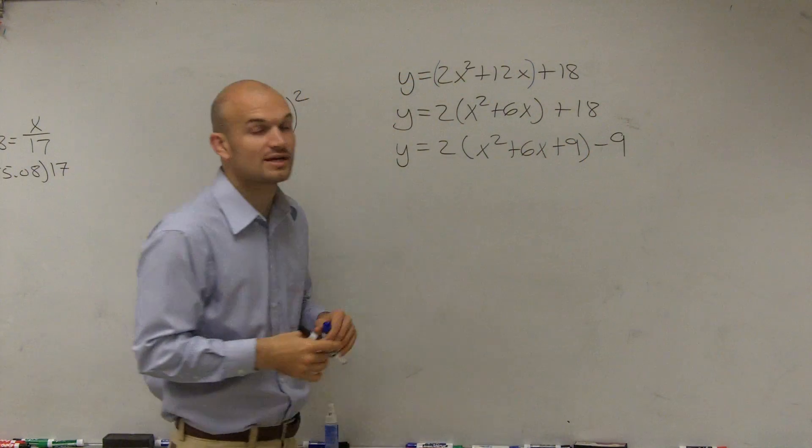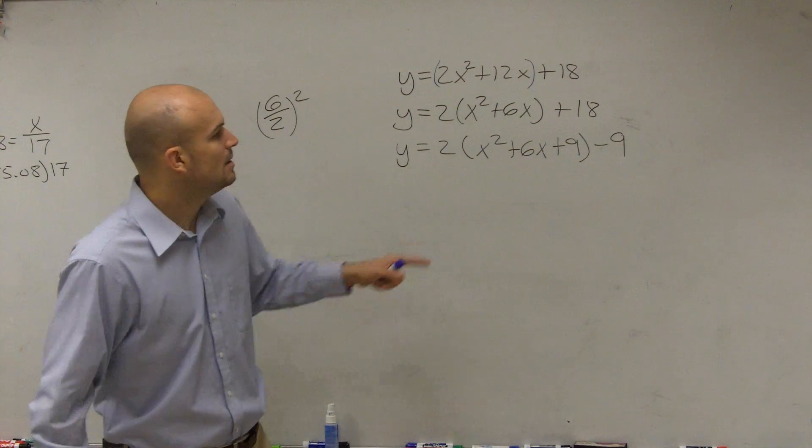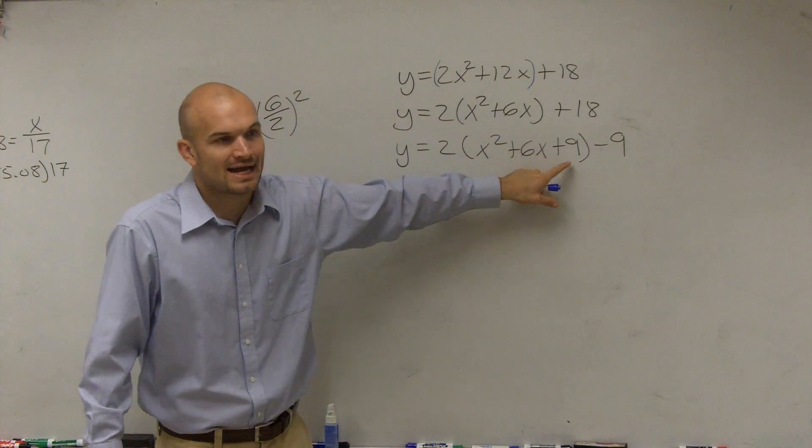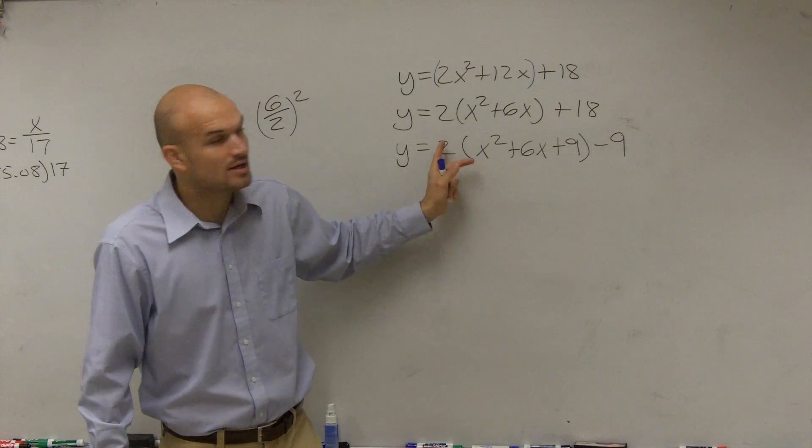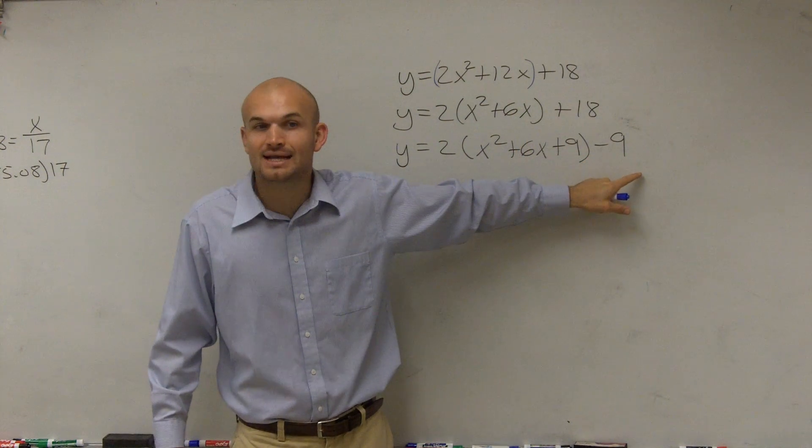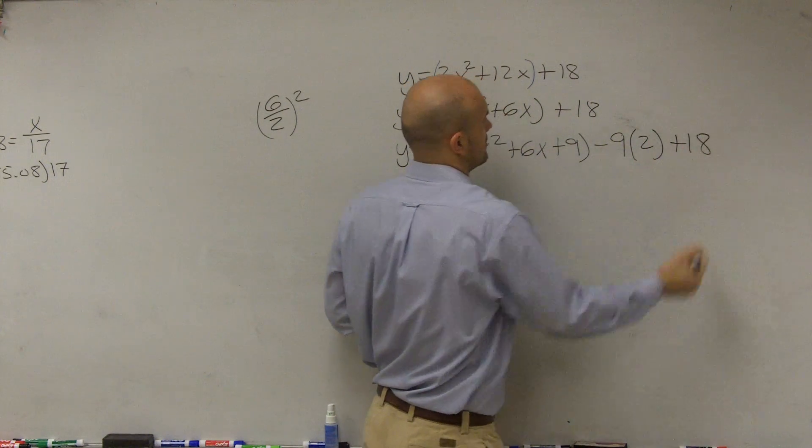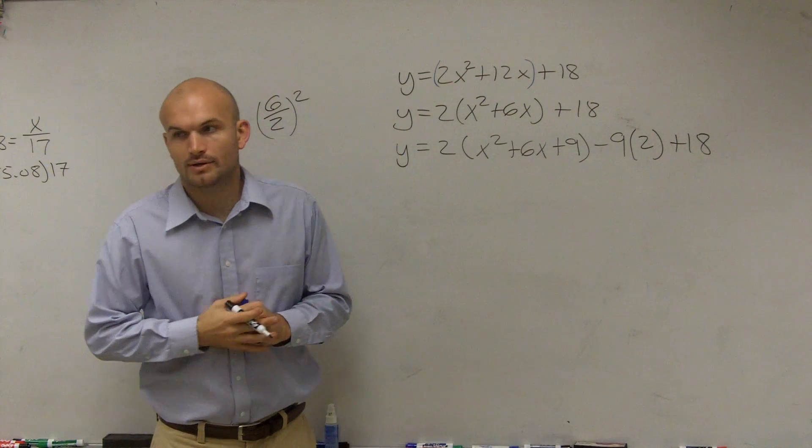And then remember, I also have to make sure I subtract 9 on the same side. But remember, I'm not really adding and subtracting 9, because I'm adding 9 that's being multiplied by 2. So I'm going to have to subtract a 9 that's going to be multiplied by 2.